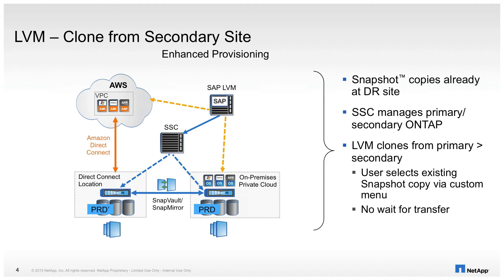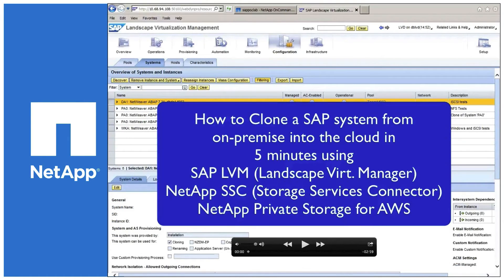In this use case, we want to demonstrate how SAP LVM can be used to fully automatically clone an SAP system from on-premise into the cloud. In the scenario shown here, the co-location is used as a disaster recovery site, and all backups utilizing NetApp snapshots are constantly replicated into the cloud to be available in case of a disaster. Customers can now use these snapshots to clone or copy a system using on-demand cloud resources directly from within SAP LVM.